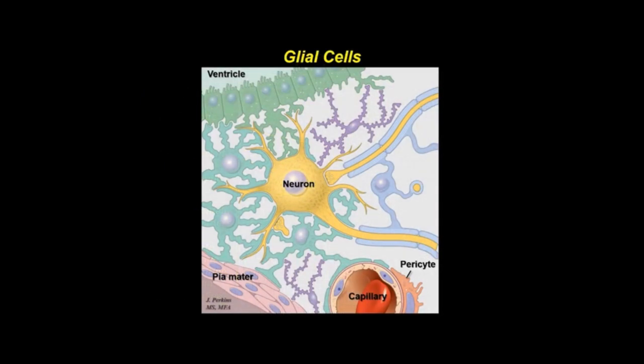Glial cells outnumber neurons by at least 10 to 1, and make up more than 50% of the total volume of the brain and spinal cord. The four types of glial cells bear descriptive names: astrocytes, oligodendrocytes, ependymal cells, and microglial cells.